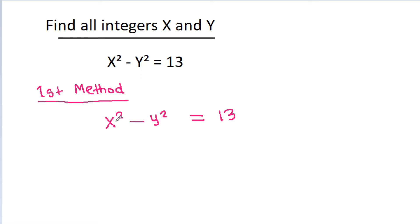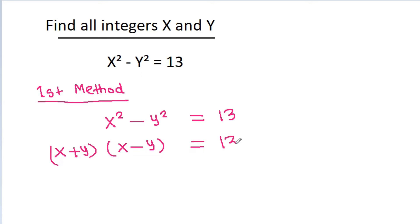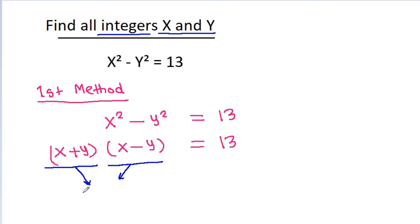And x squared minus y squared equals x plus y times x minus y, which is equal to 13. Since x and y are integers, x plus y and x minus y will also be integers. So 13 is expressed as a product of two integers.